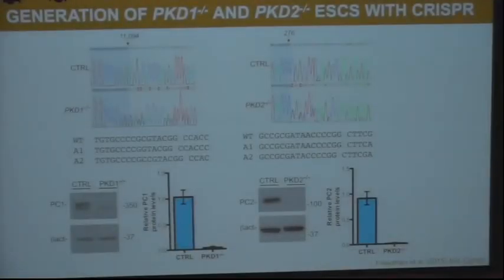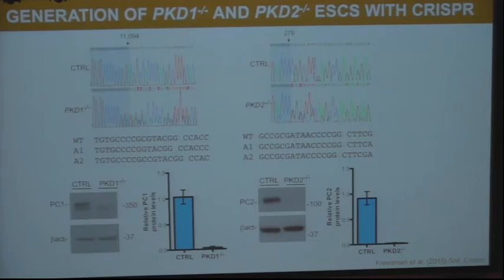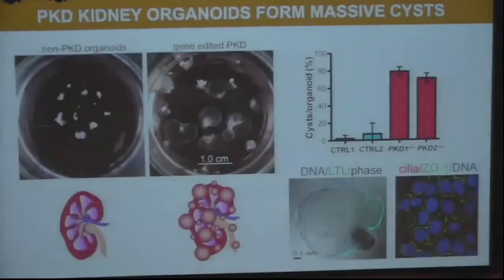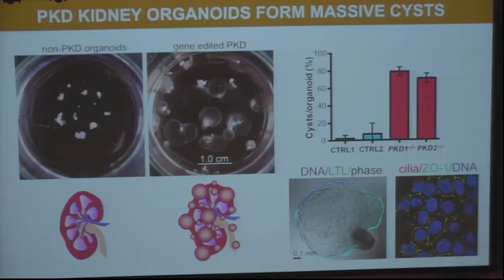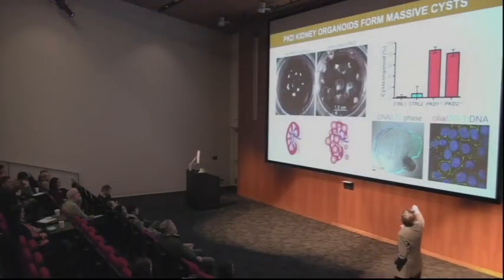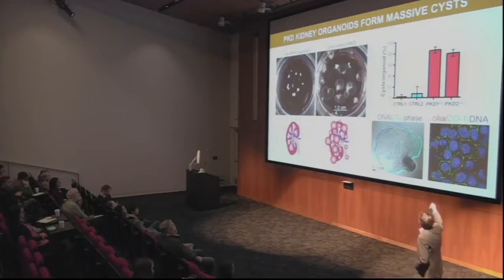To do this, we introduced mutations into either PKD1 or PKD2 using the CRISPR-Cas9 system. Results shown by Western blot demonstrate we've knocked out specifically the mature form of PC1 or essentially any protein of PC2. When we make kidney organoids from our PKD pluripotent stem cells, using a six-well dish at 35 millimeters in diameter, the non-PKD organoids on the left look normal, while the gene-edited PKD knockout organoids on the right have grown to a very large size over several months. Control organoids very rarely give rise to fluid-filled cysts, whereas both PKD1 and PKD2 knockout lines do.